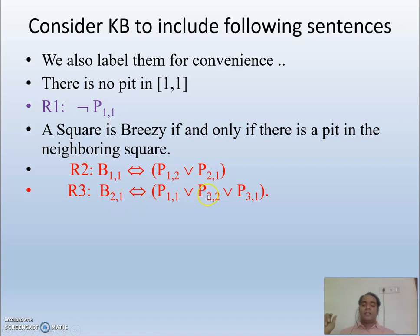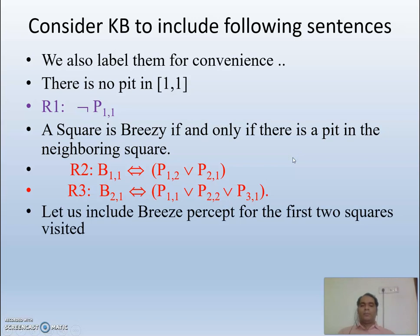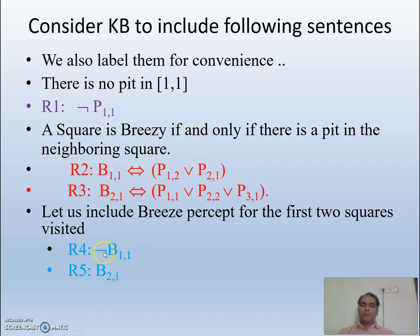Similarly for cell (2,1), I need to consider three neighboring locations: (1,1), (2,2), and (3,1). If there is a pit in any of those locations, then there is a breeze at (2,1). We also include breeze percepts for the two squares visited: B(2,1) is true — there was a breeze — and ¬B(1,1) is true — there was no breeze at (1,1). These form rules R4 and R5, and combining all premises gives us rule R6.